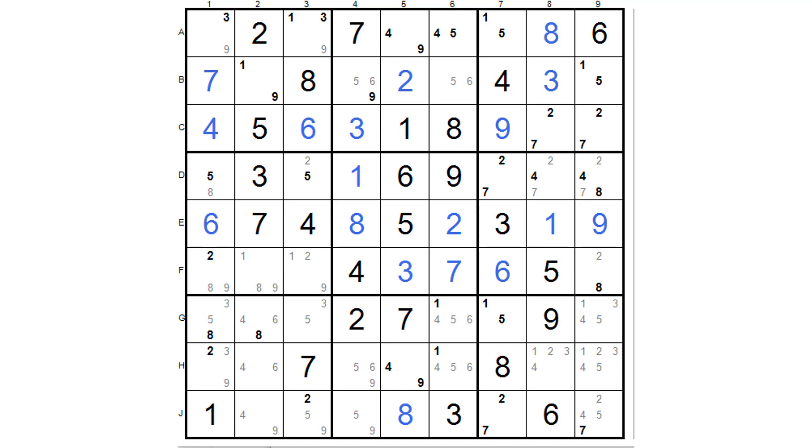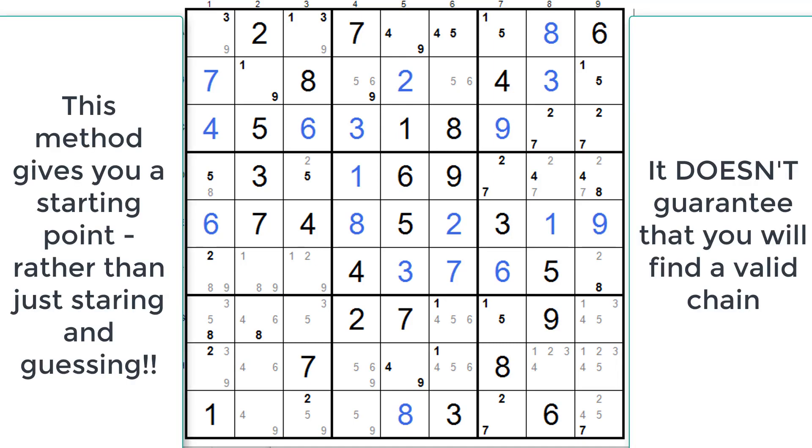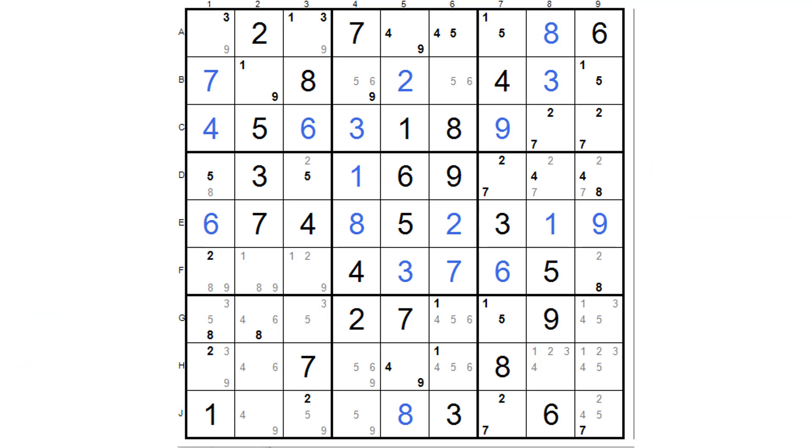If you're trying to find a chain and you have a whole load of cells with pairs in them, this is how Glenn does it. Now he uses the old pen and paper, I like to use the computer, but I find this is really good because I've always found this difficult. Where do you start? By the way, this is the diabolical one from the Telegraph of the 26th of August 2022.